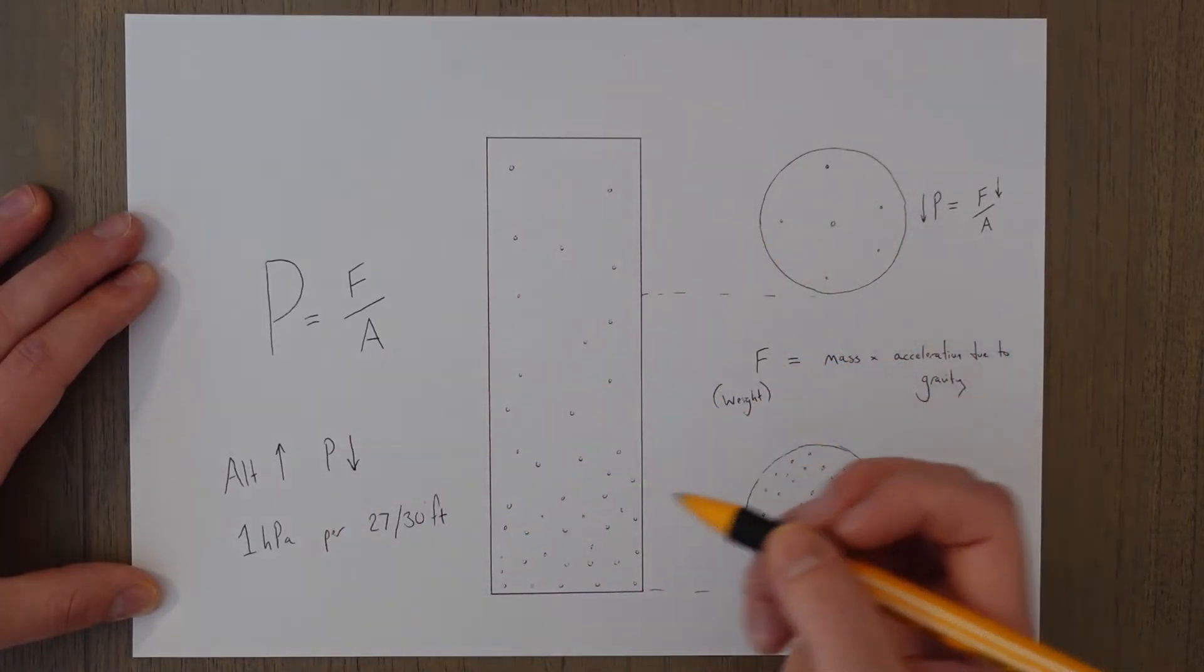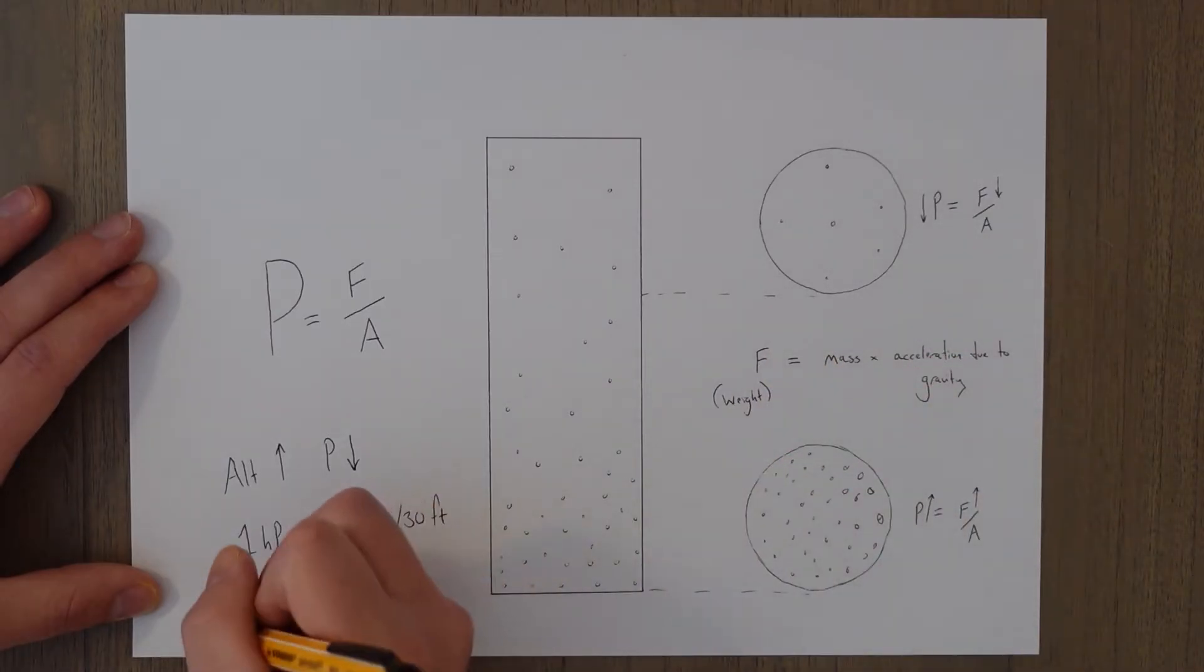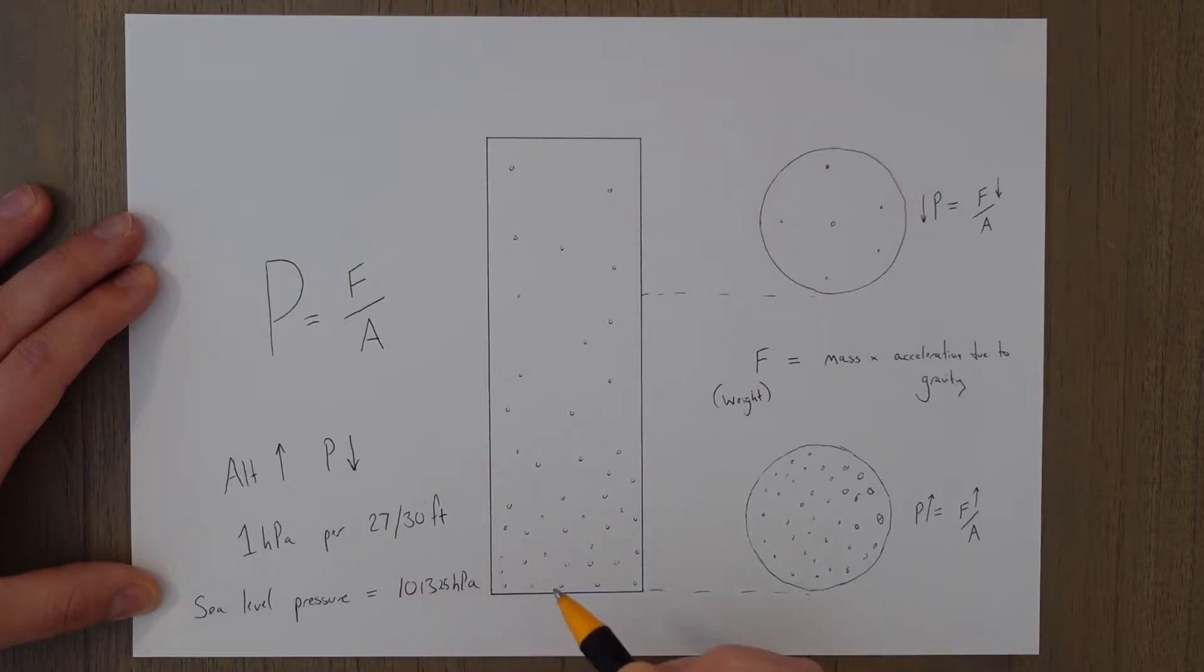In the international standard atmosphere, the sea level pressure is equal to 1013.25 hectopascals or 1013.25 millibars, which is the equivalent of 29.92 inches of mercury.